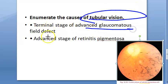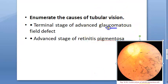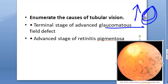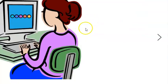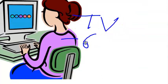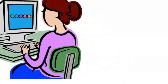The two causes of tubular vision are: advanced glaucomatous field effects and retinitis pigmentosa. In glaucoma, intraocular pressure is raised, and ultimately optic nerve damage occurs. When the optic nerve is getting damaged, tubular vision can result. So remember only these two causes.